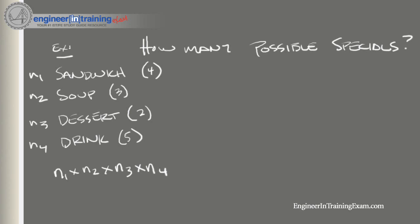To determine the number of possible specials, we multiply n1 times n2 times n3 times n4, which is simply 4 times 3 times 2 times 5, and that equals 120. So the number of possible specials, given the number of stages and the circumstances we've defined, is 120 possible specials that can be chosen.